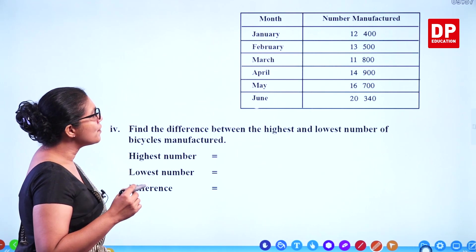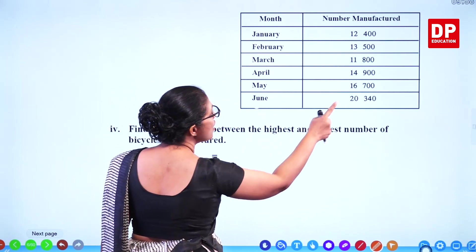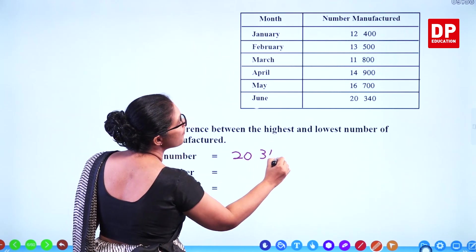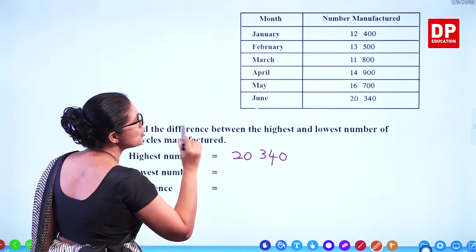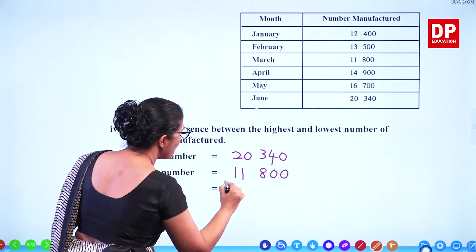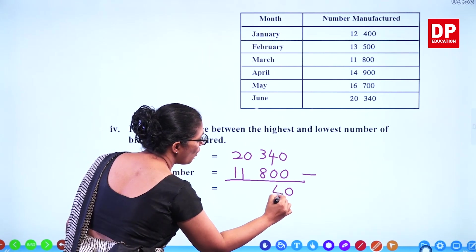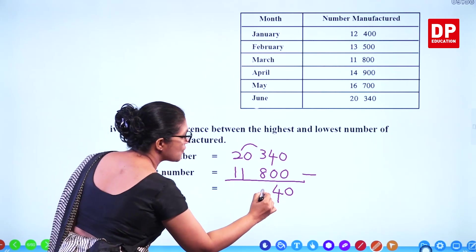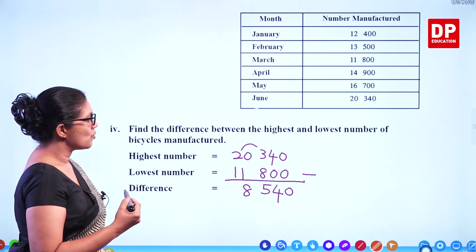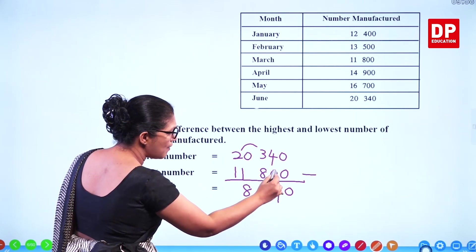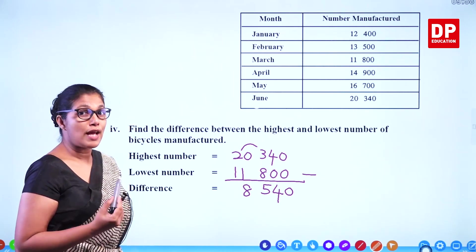Find the difference between the highest and the lowest number of bicycles manufactured. The highest is in June: 20,340, and the lowest is in March: 11,800. Subtracting gives: 0, 4 minus 0 is 4, 13 minus 8 is 5, this becomes 9, 9 minus 1 is 8, 1 minus 1 is 0. The difference is 8,540. You can verify by adding: 8,540 plus 11,800 equals 20,340.